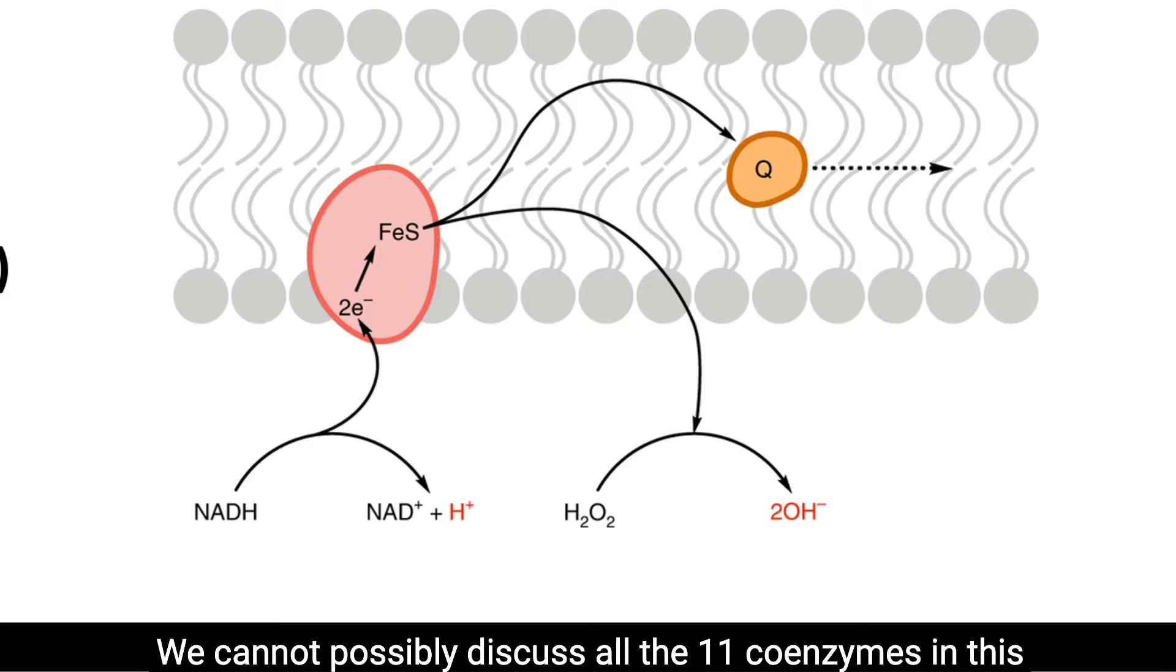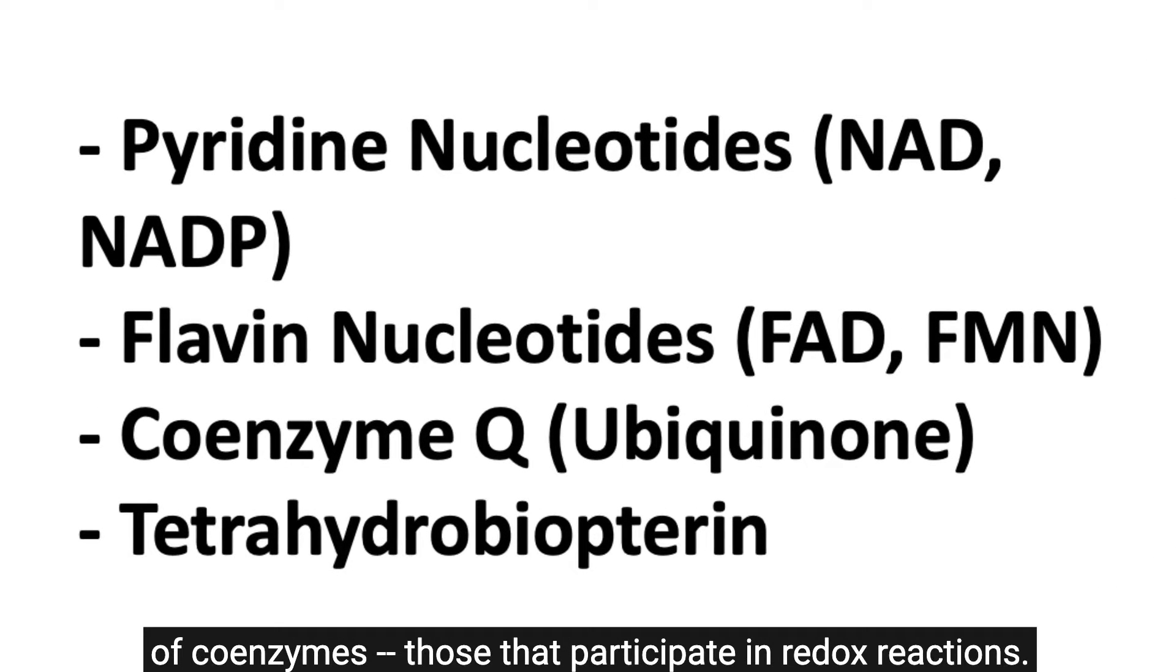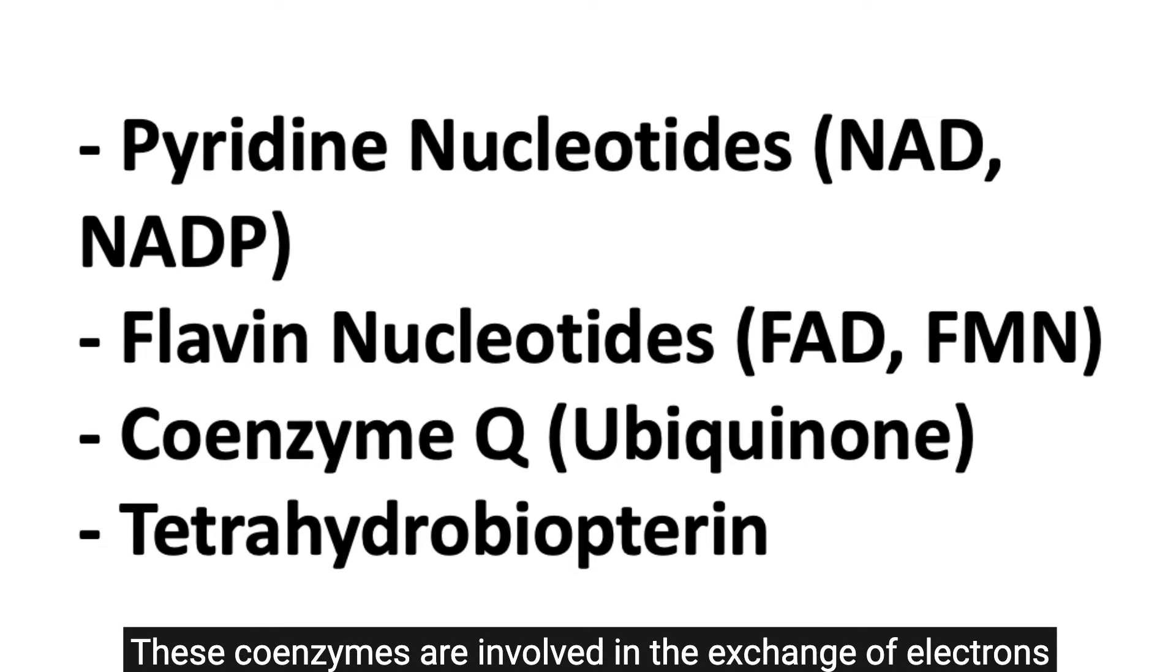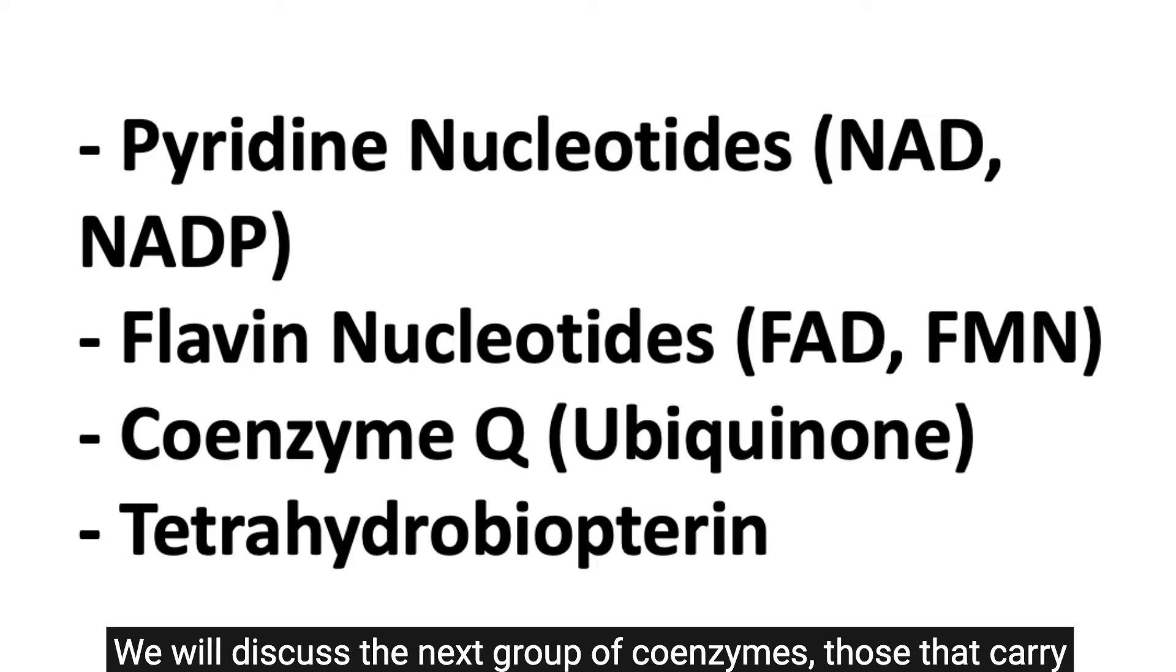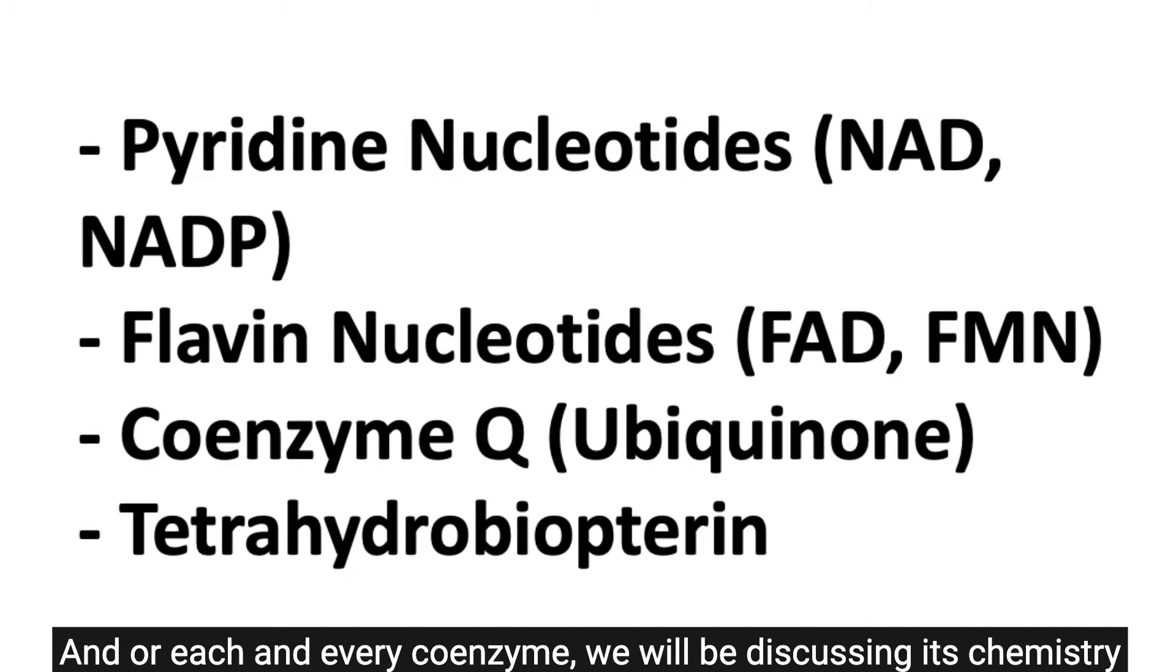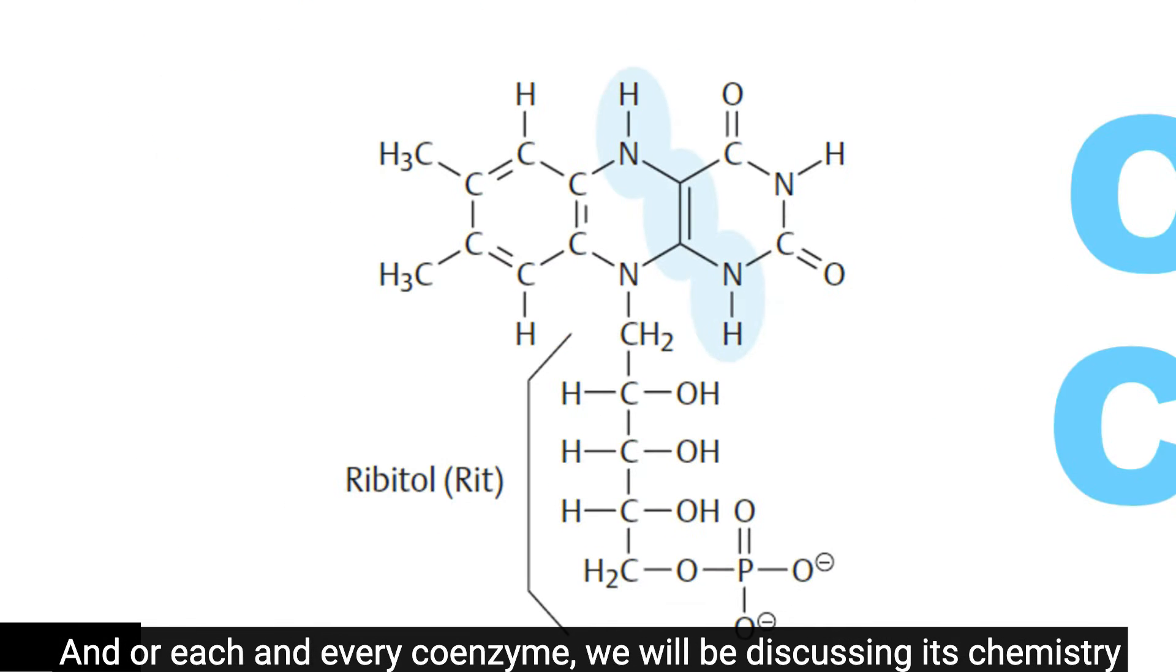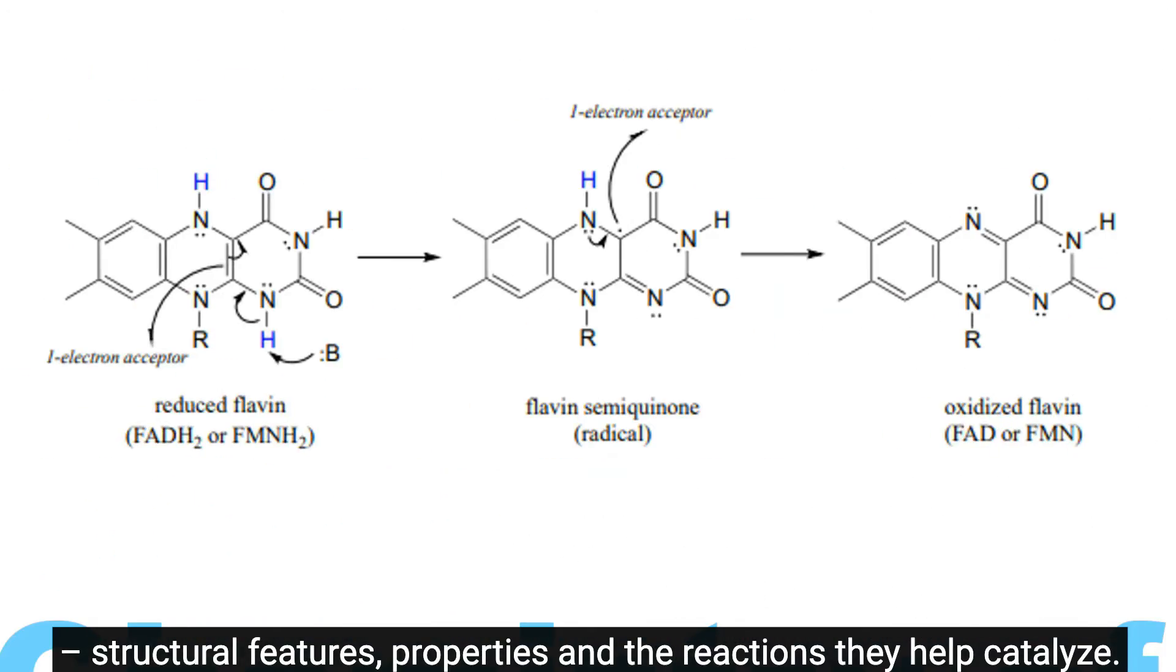We cannot possibly discuss all 11 coenzymes in this video, so we just tackle the four members of the first group of coenzymes, those that participate in redox reactions. These coenzymes are involved in the exchange of electrons or hydrogen ions during certain reactions. We will discuss the next group of coenzymes in the next video. Under each coenzyme, we will be discussing its chemistry, structural features, properties, and the reactions they help catalyze.